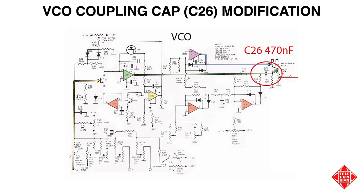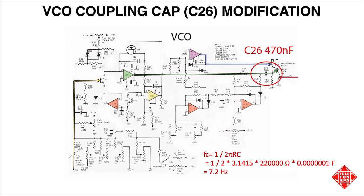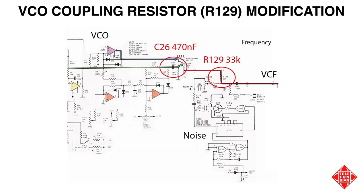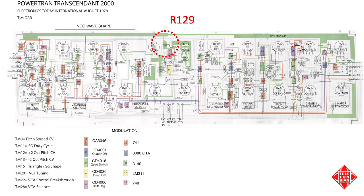What about the other modifications? The second modification suggested by Tony is to swap out C26, a coupling capacitor in the VCO. Together with R60, C26 forms a high-pass filter on the output of the sawtooth wave. Tony suggests increasing the value of this capacitor from 100 nF to 470 nF, which will move the high-pass filter cutoff frequency — nominally 7.2 Hz — down to 1.5 Hz. However, given that the nominal cutoff frequency is already below the range of human hearing, and that this modification only affects the sawtooth waveform, I'm choosing not to implement this modification for the time being.